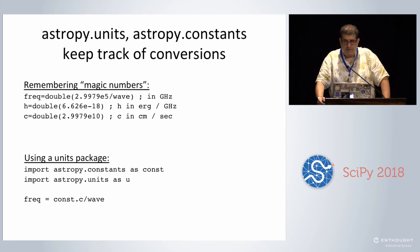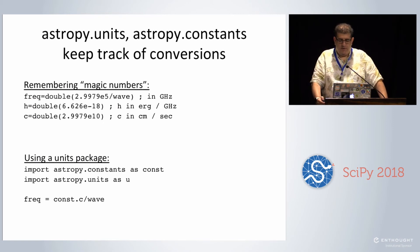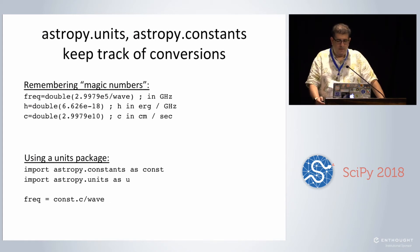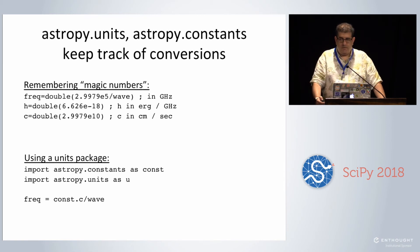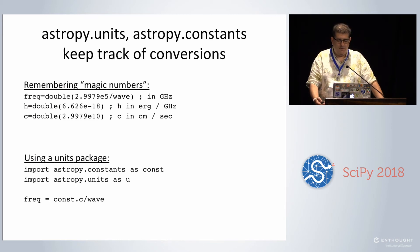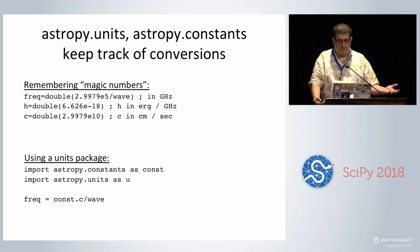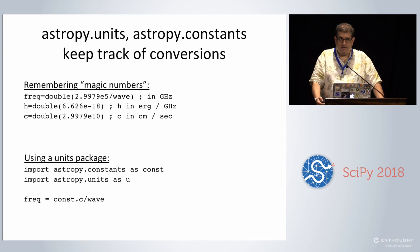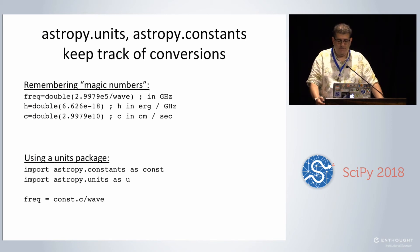AstroPy units and AstroPy constants really came in handy for keeping track of conversions. We were given an ideal routine for calculating the instrument sensitivity from the instrument PI, and there were a lot of magic numbers with comments about units — gigahertz, ergs per gigahertz, and so on. Using a units package really helped to eliminate having to track that by hand. We were also able to put assertions in the code: when we had a dimensionless signal-to-noise ratio, we could actually check that it was dimensionless. I really urge use of a units package.